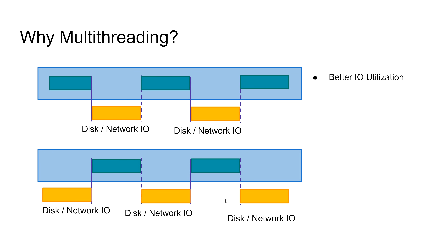You might even have two threads using the network card at the same time — for instance if they are both downloading a file from a slow server, you might be able to start multiple I/O downloads simultaneously from different threads. In this way, we can not only better utilize the CPU, but also the I/O capabilities of the computer — the bandwidth to the disk and to the network.